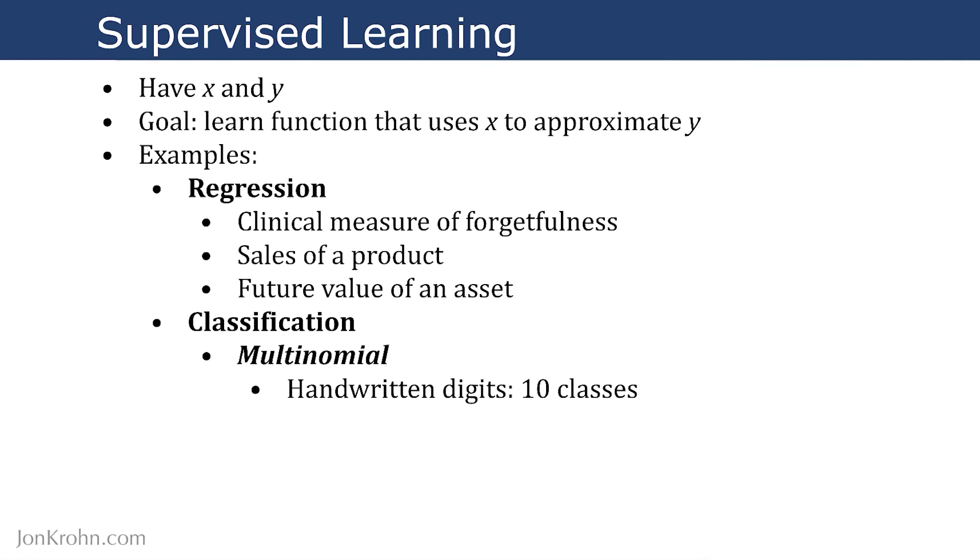And you could build a machine vision algorithm to classify any given sample of handwriting as to whether it's one of these 10 classes. So we have many classes, more than two classes. And so this is a multinomial classification problem.